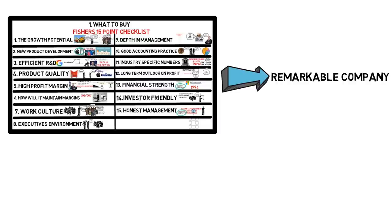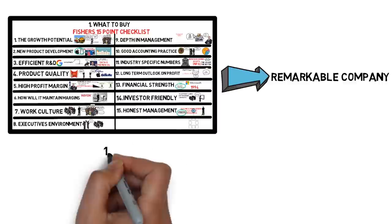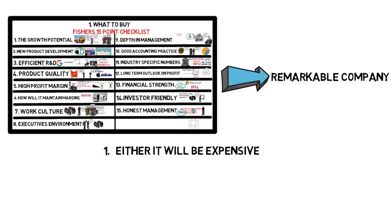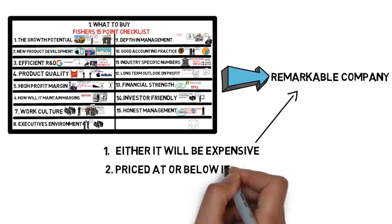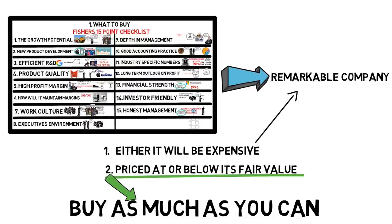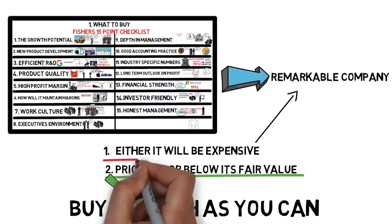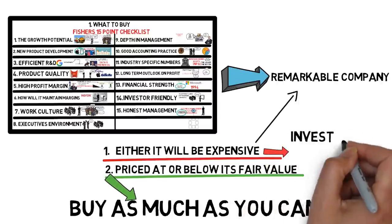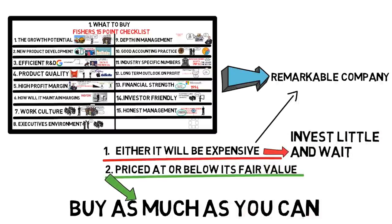Once you find a remarkable company, there can only be two ways about it. First, that it can be priced expensively than other of its peers, and the reason for it is pretty much because it is a remarkable business. And the second, that it is priced fairly in your opinion or below its fair value. In the latter case, Fisher says that you must just buy as much of such type of company as you can at such a price. And as the company does well and grows as expected, you can add more money to it. However, if the stock price is quoted expensive, then you can still invest a small amount and wait to deploy the rest of the money.